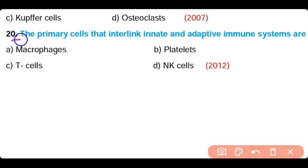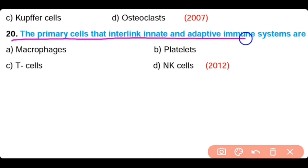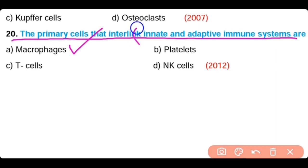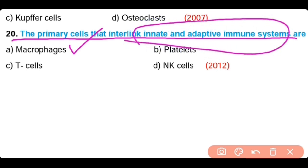Question number 20. The primary cells that interlink innate and adaptive immune system are: macrophages, platelets, T cells, or natural killer cells. The correct answer is Option A. Macrophages are the primary cells that can interlink the innate and adaptive immune system with each other.